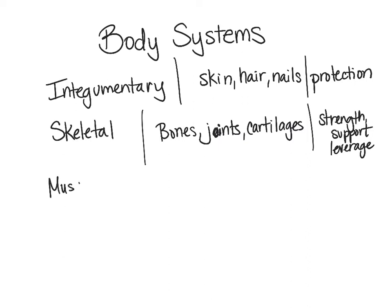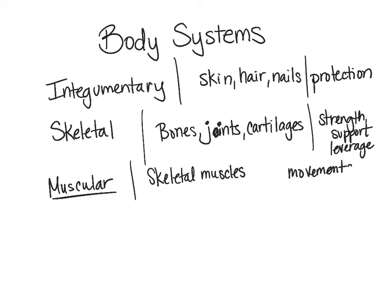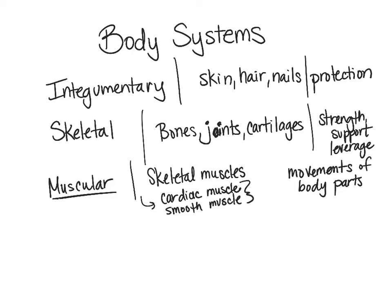The next system is the muscular system, made up of our muscles. Mainly when we talk about the muscular system, we're talking about our skeletal muscles, which are used for movement of body parts. There are also different types of muscles addressed in other systems, including cardiac muscle and smooth muscle, which we'll look at more closely when we get to the systems that utilize them.